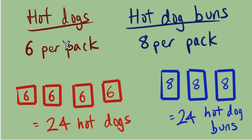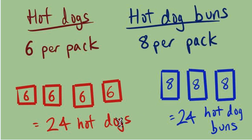If we were to get 4 of the 6-packs and 3 of the 8-packs, that leaves us with exactly 24 hot dogs and 24 hot dog buns. It's a way to take two different numbers and see how we can build them up so they equal the same thing. It took 4 packs of hot dogs but only 3 packs of buns. We could find other points where they equal each other at 48, 72, or 96 — those are more common multiples — but 24 is the least.